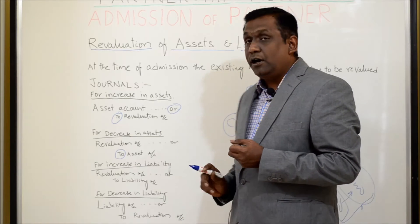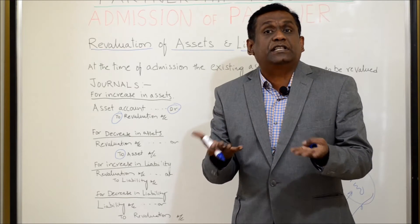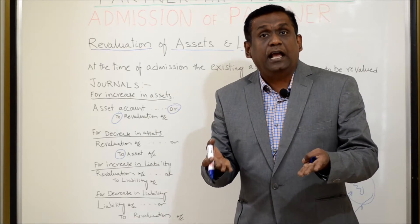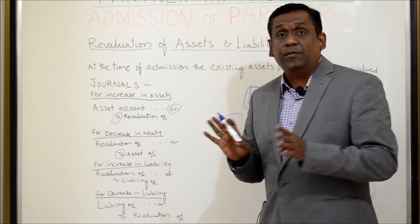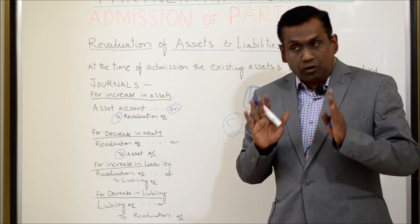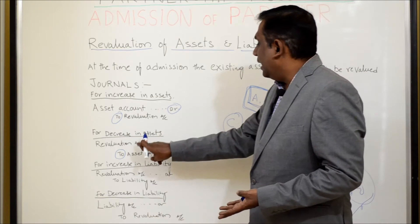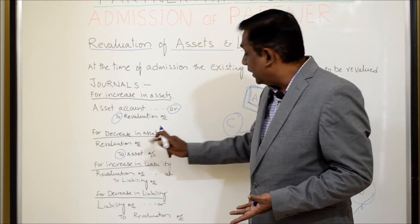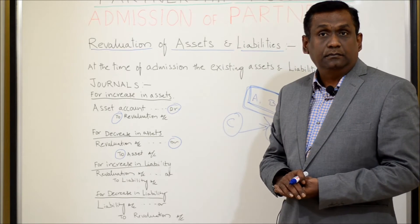Why do I debit the revaluation account here? Decrease in asset is a loss to the business. All expenses and losses are to be debited as per nominal account principle. Revaluation is a nominal account, so decrease in asset is a loss, and that loss has to be debited in the revaluation account. Hence I debited the revaluation account.